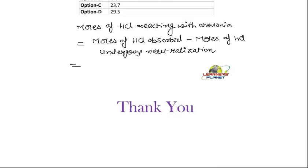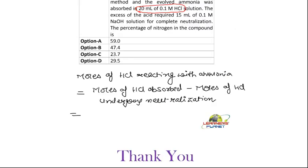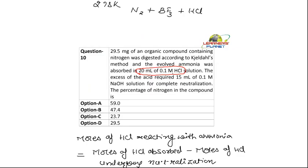So the moles of HCl reacting with ammonia will be equal to: the volume is 20 ml and the molarity is 0.1. The number of moles equals molarity multiplied by volume in liters, which is 0.1 multiplied by 20 multiplied by 10 to the power minus 3 liters, giving 10 to the power minus 3 moles.